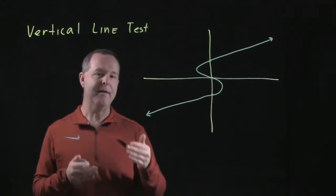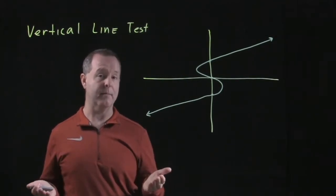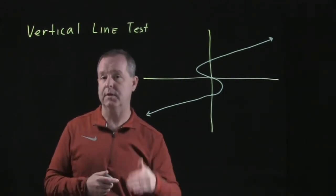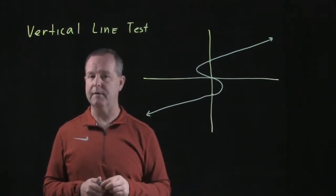Because remember, every x can only have one y value in order for it to be a function. But if there's a value of x that produces more than one value, then that graph is no longer a function.